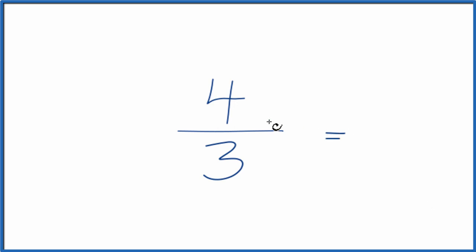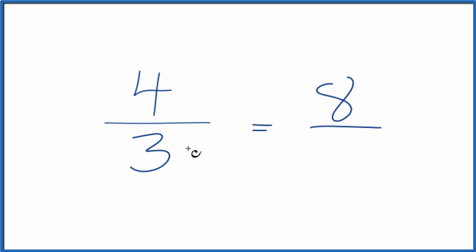So we could just double 4 and 3. So 4 times 2 is 8. 3 times 2 is 6. 8 sixths, that's an equivalent fraction to 4 thirds.